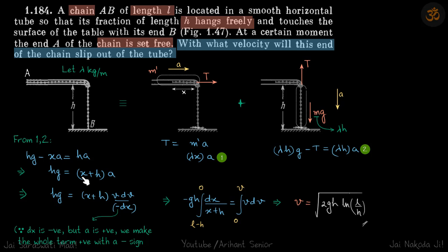We have a term of x, so let's write acceleration in form of x, because we want to relate velocity and x. That's what we're asked: what will be the velocity when the chain will slip out of the tube, in other words when x will become zero.